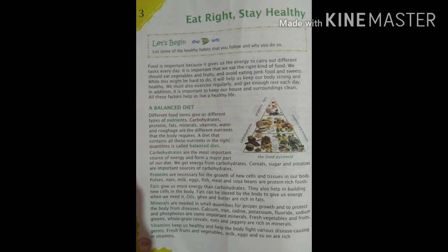Different food items give us different types of nutrients. Carbohydrates, proteins, fats, minerals, vitamins, water and roughage are the different nutrients that the body requires. A diet that contains all these nutrients in the right quantities is called balanced diet.